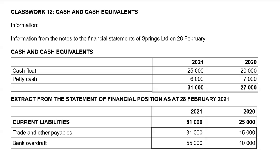Check the current liabilities for bank overdraft. In this case we are given an extract from the statement of financial position as at 28th of February 2021, and when you look at the current liabilities just underneath trading and other payables, we do have bank overdraft. For last year it was 10,000; for this year it's 55,000, and realize that your bank overdraft has gone up.